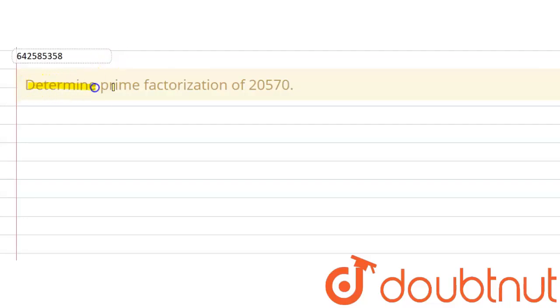The given question says determine prime factorization of 20,570. So this is the number which we are given and we are supposed to find the prime factorization of this number. So let's write down the number. The number is 20,570.